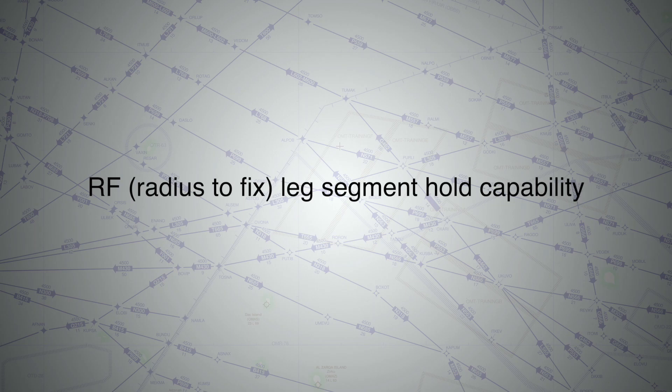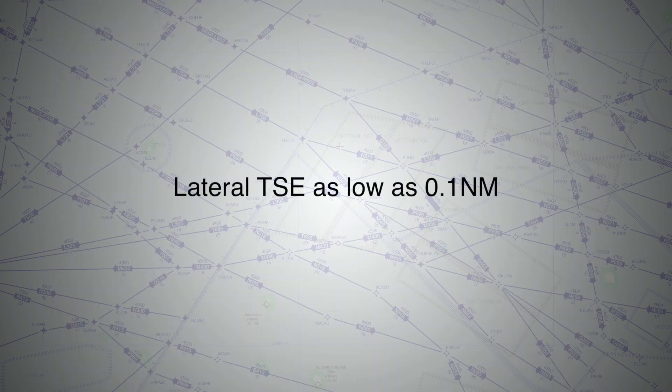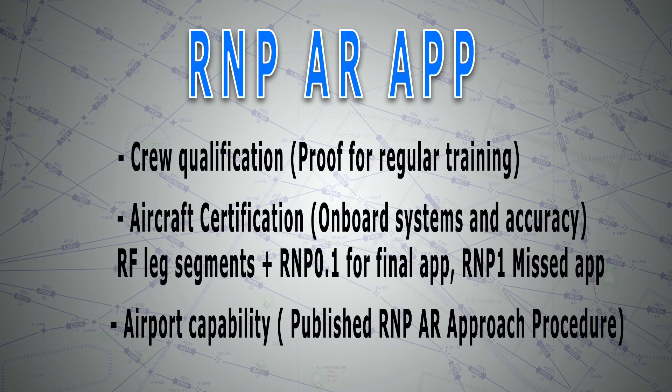Next, an RF leg segment might be used after the precise final approach fix. An RF segment is nothing but a curved approach, meaning the aircraft must have the ability to maintain and fly a curved approach. And last but not least, a lateral track system error value as low as 0.1 nautical mile. When all of these requirements are met, then, and only then, can we fly an RNP-AR approach, because we must have already obtained the authorization that is required.